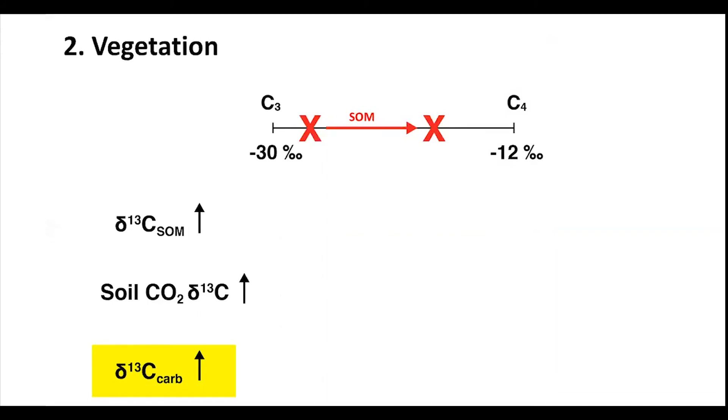During aridification, we may expect to see a shift from C3 to C4 vegetation just because they're more equipped for that ecosystem. As a result, soil organic matter delta C13 values would move more towards the C4 end member and reflect that shift. As soil CO2 delta C13 values increase, soil carbonate delta C13 values would also increase under a shift from C3 to C4 dominated ecosystem.